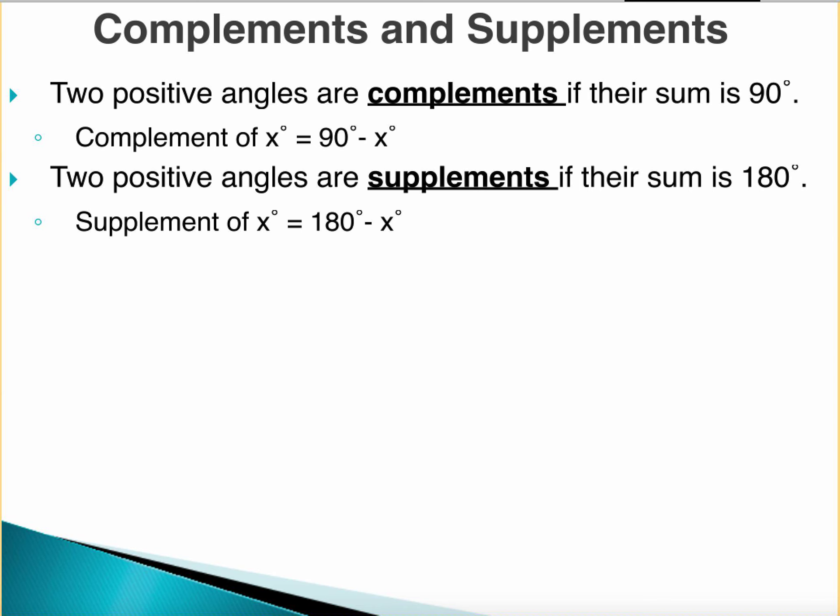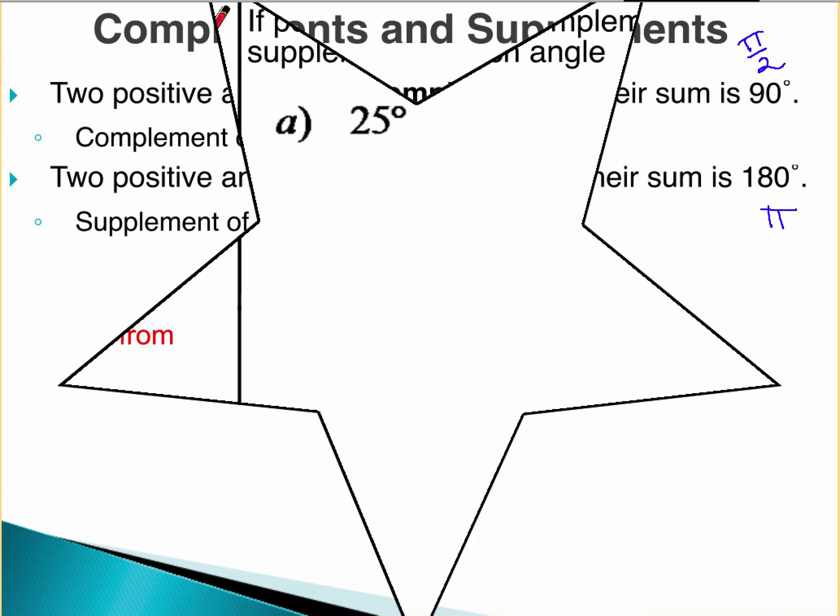And now, this is our final bit of information, complements and supplements. Two positive angles are complements if their sum is 90 degrees. That is the same as π over 2 radians. So, two positive angles are complements if you add them up together and you get 90 degrees, or you add them up together and you get π over 2 radians. Angles will be supplements that we call supplementary angles if, when you add them up, you get 180 degrees or π radians. So, let's go to our next question.